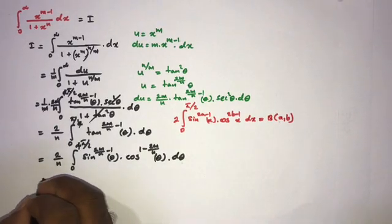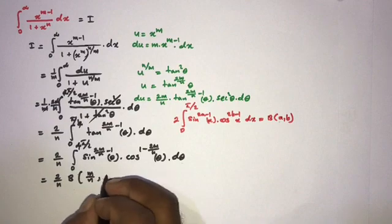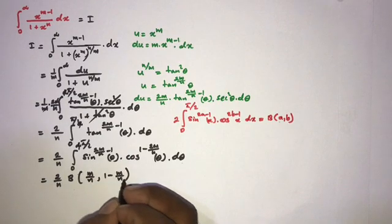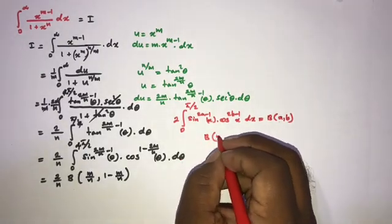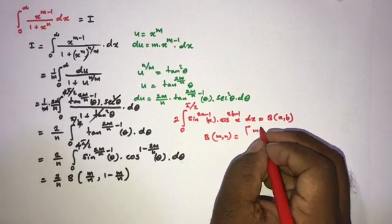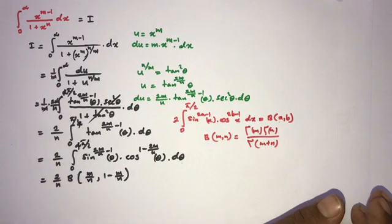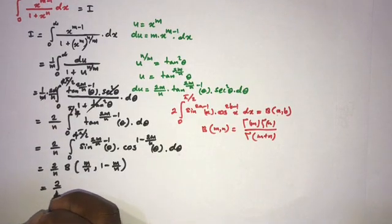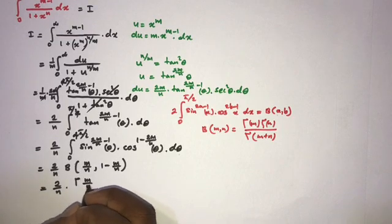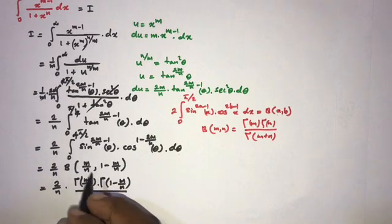Now, we express the beta function using gamma functions. The formula is beta of m, n equals gamma of m times gamma of n over gamma of m plus n. So we can write 2 over n times gamma of m over n times gamma of 1 minus m over n, over gamma of 1.